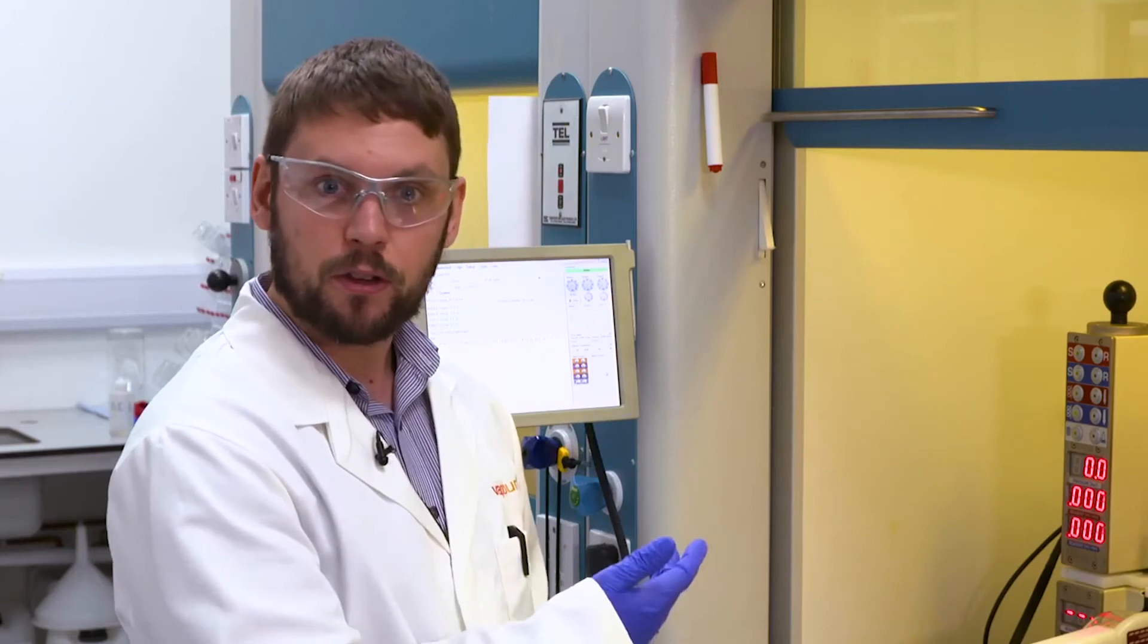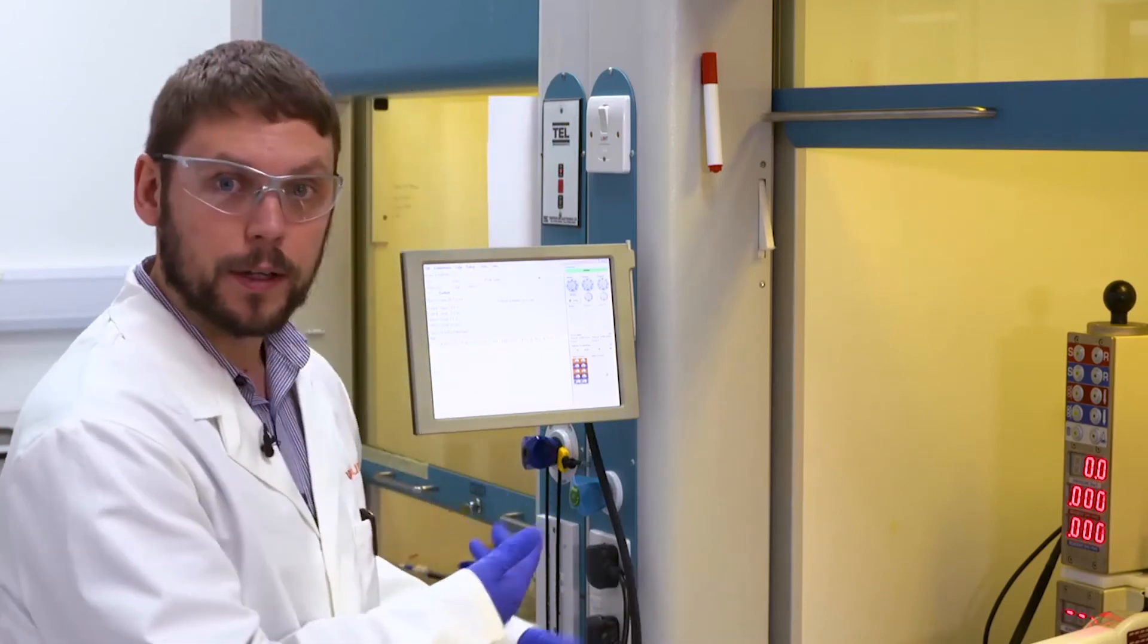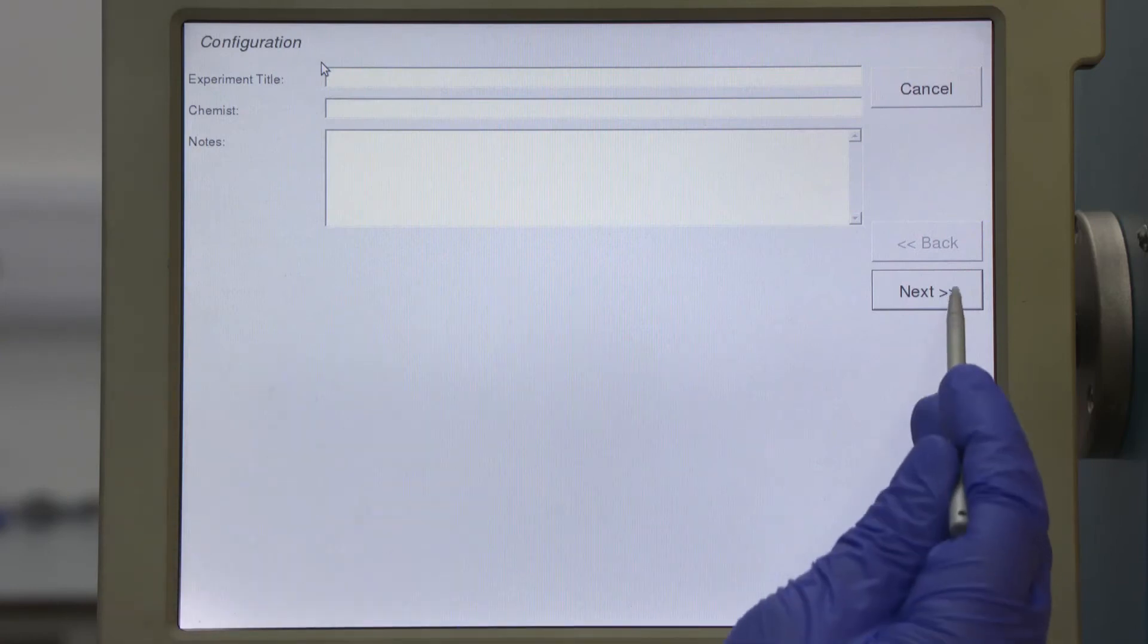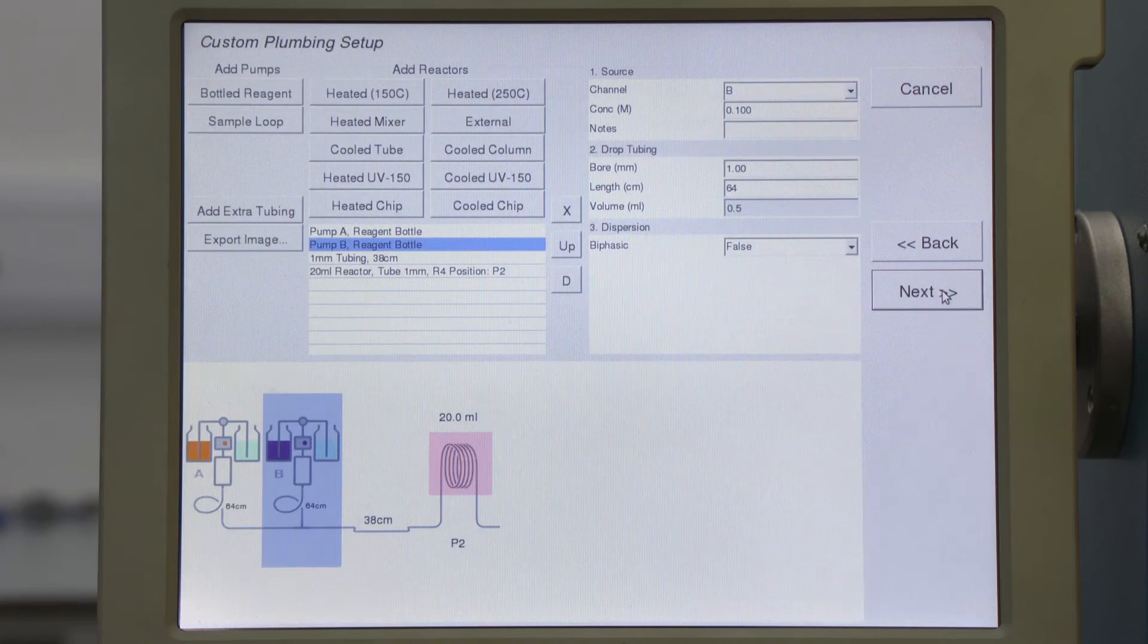Now the reactor system is ready and my reagents are primed. I can design my experiment using FlowCommander. You open a new experiment, input some information about the experiment you're running, then tell FlowCommander what configuration you're using. I ran this experiment earlier today, so the information is already here.